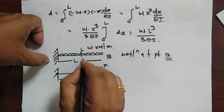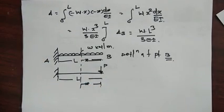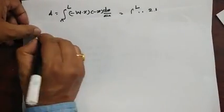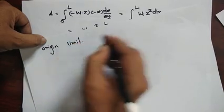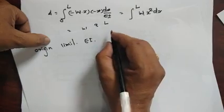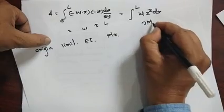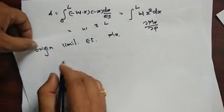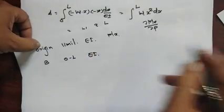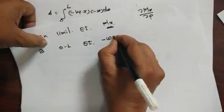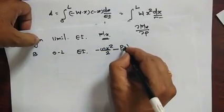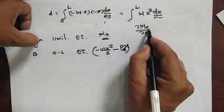We take the bending moment from the free end and prepare the table: origin is B, limit is 0 to L, EI is constant. The bending moment due to the UDL is −Wx²/2 (hogging), and due to the fictitious force P it is −Px. So Mx = −Wx²/2 − Px. Taking ∂Mx/∂P gives −x.